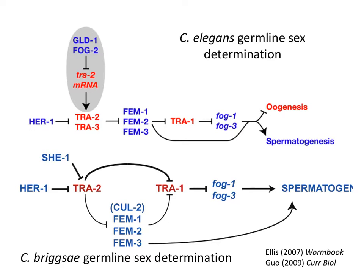There are two reasons to know this pathway. First, the paper we're going to read talks about several members of this pathway, so it helps to understand the logic. Second, there are differences in how C. briggsae and C. elegans regulate germline sex determination. Here's the same figure comparing the two: for C. elegans on top, and the same pathway for C. briggsae below. It's the same fog genes activating spermatogenesis in both species. But there's an important difference: in C. elegans and C. briggsae, different genes repress tra-2.